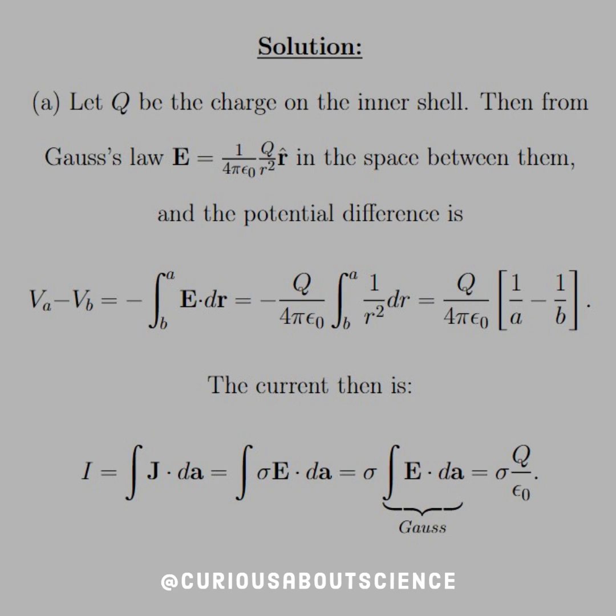So Part A for the solution: If we let Q be the charge on the inner shell, then from Gauss's Law, we know we have the electric field of a sphere: 1 over 4 pi epsilon 0, Q over r squared r hat, in the space in between them. And the potential difference is VA minus VB, which is just the negative integral from B to A of the line integral of E. So chug that through and we see that Q equals 4 pi epsilon 0 times 1 over A minus 1 over B. We've seen this before.